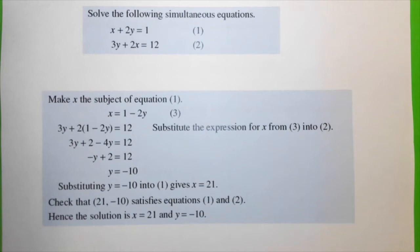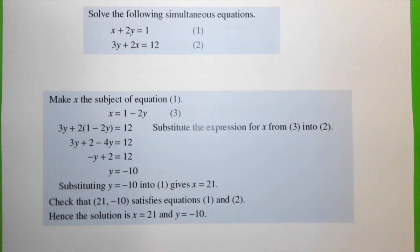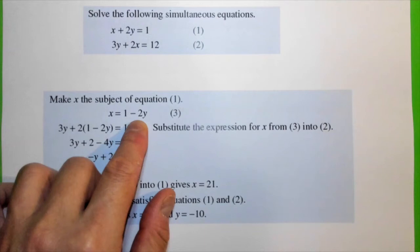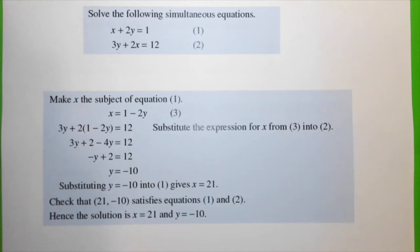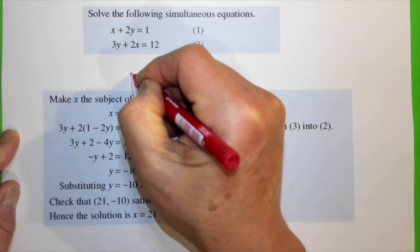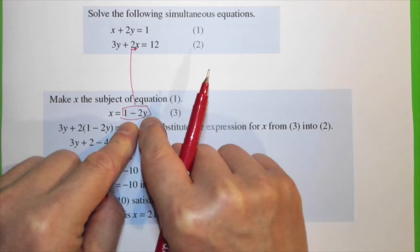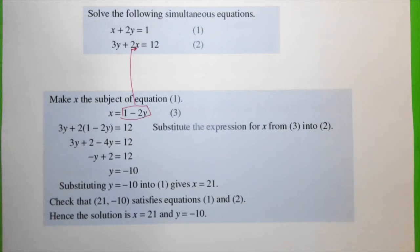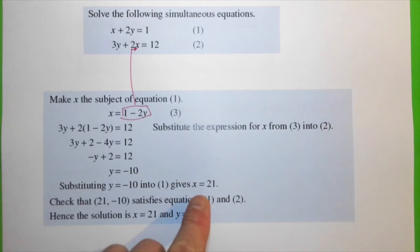Let's solve another problem. Equation 1 is x plus 2y equals 1 and 3y plus 2x equals 2. Let's rearrange equation 1 and make x the subject: x equals 1 minus 2y, which we call equation 3. From here, we substitute 1 minus 2y into equation 2, giving us 3y plus 2 multiplied by (1 minus 2y) equals 12. Solving it, we get y equals minus 10. Substituting minus 10 into equation 1, we get x equals 21.